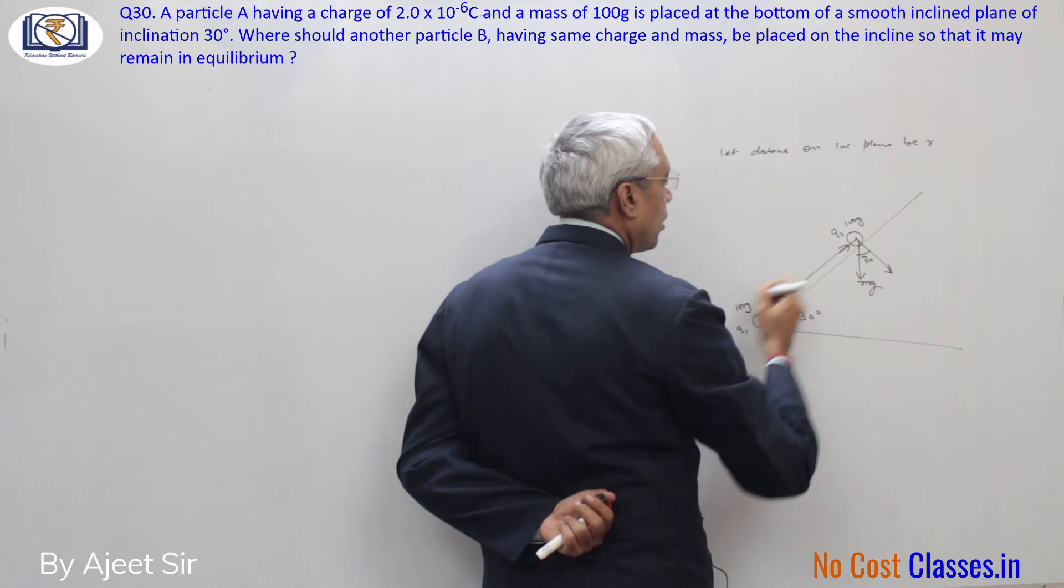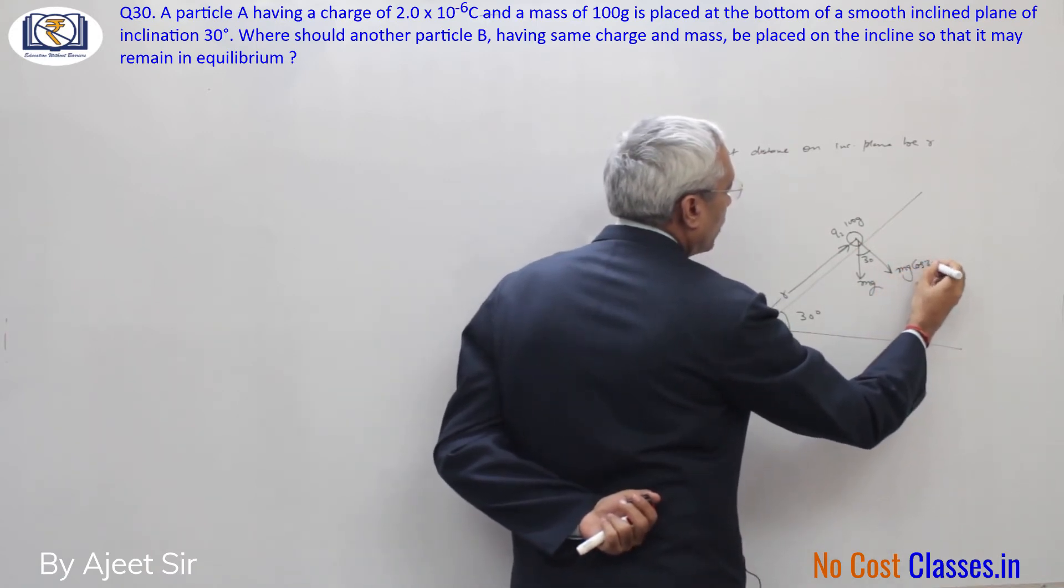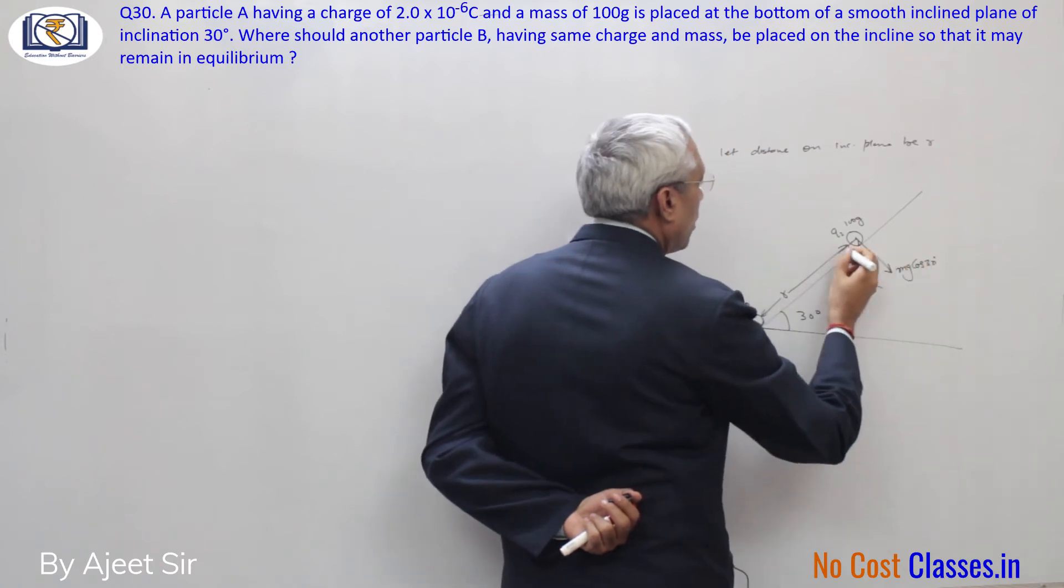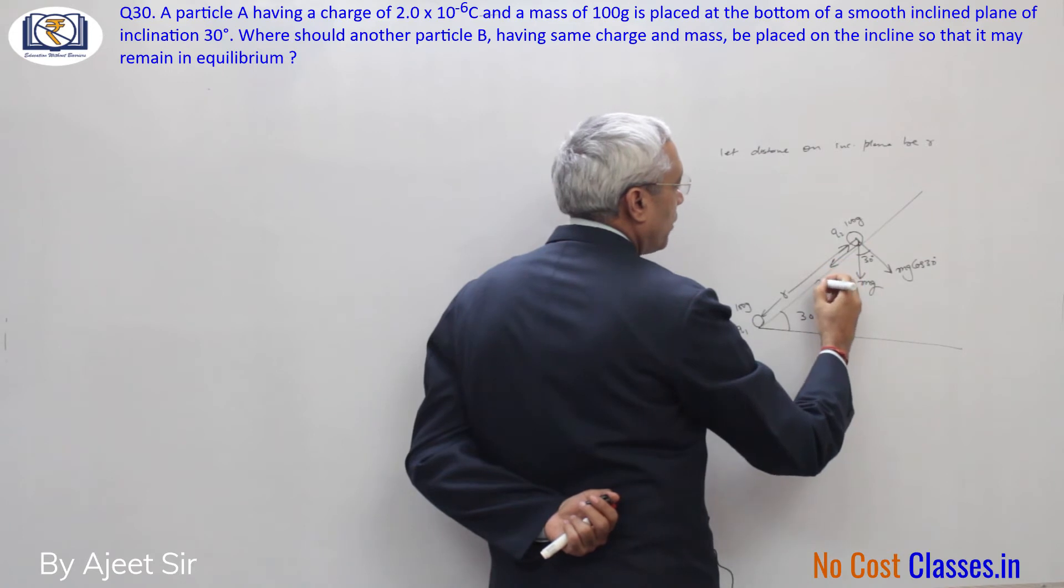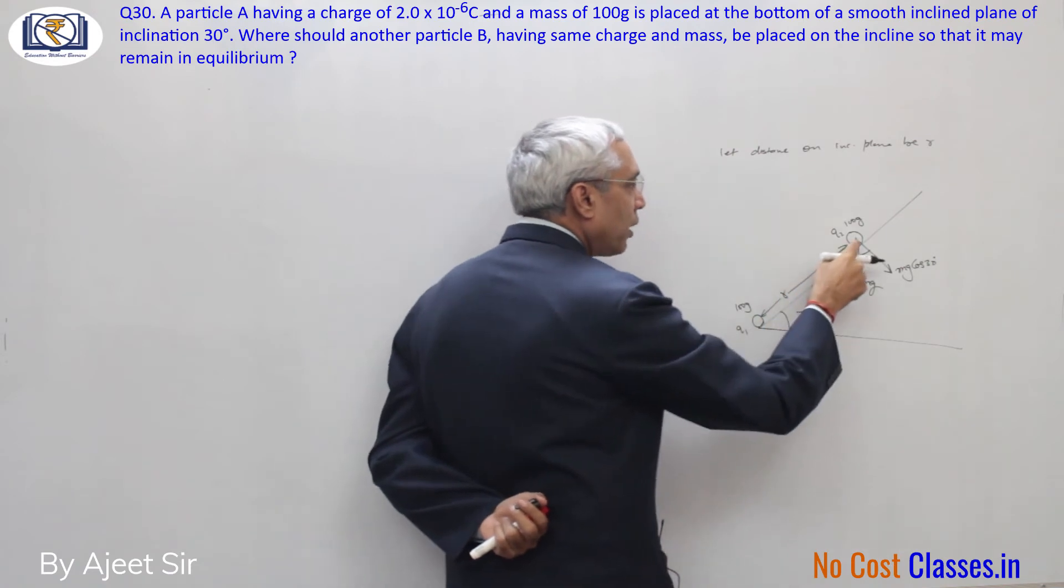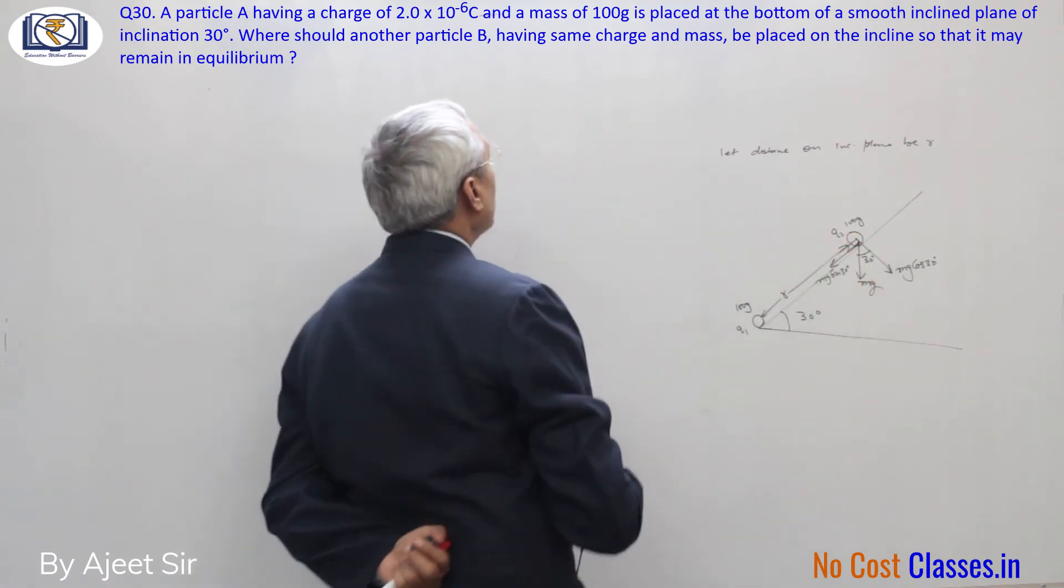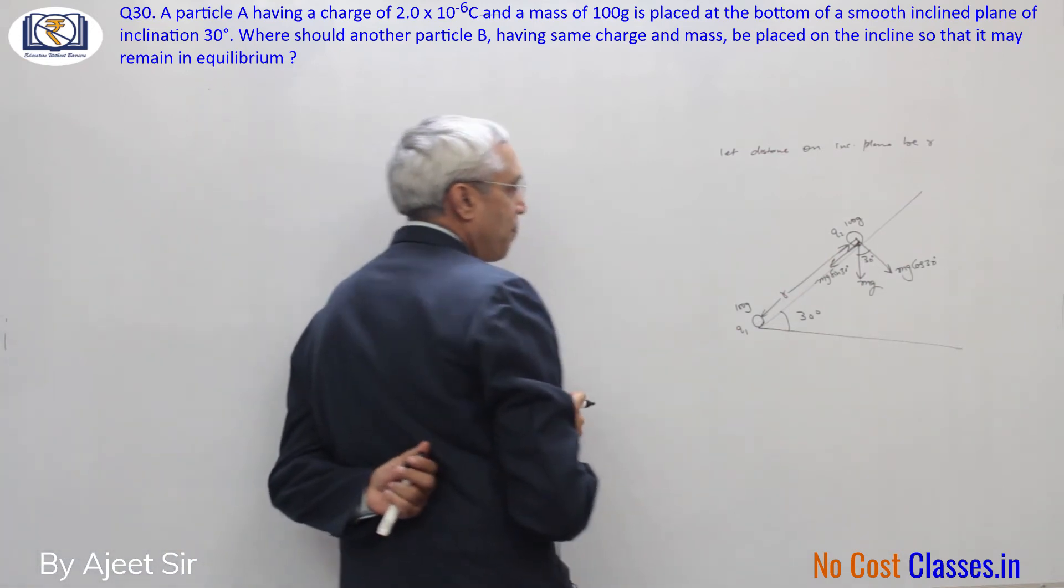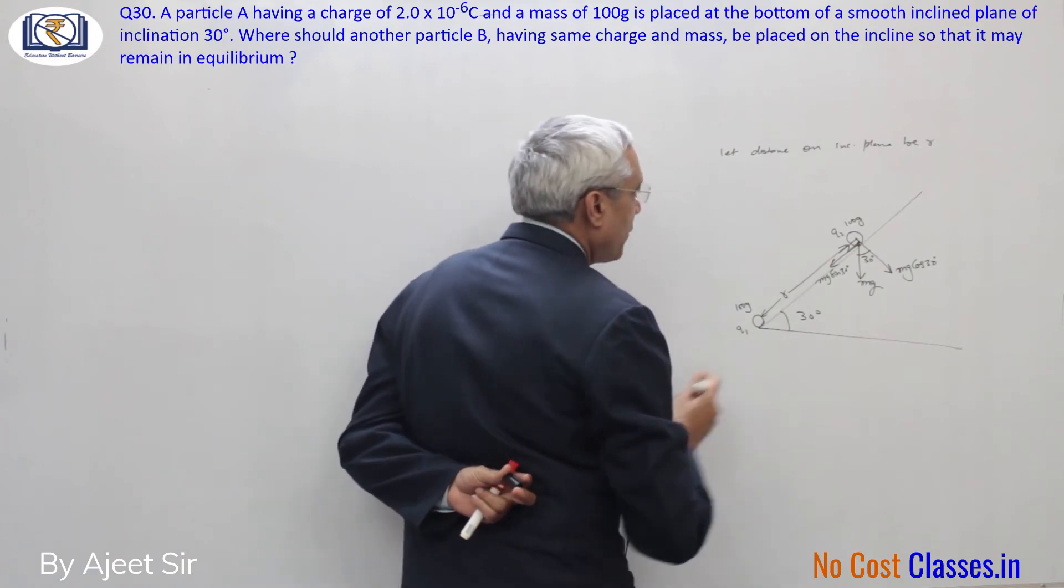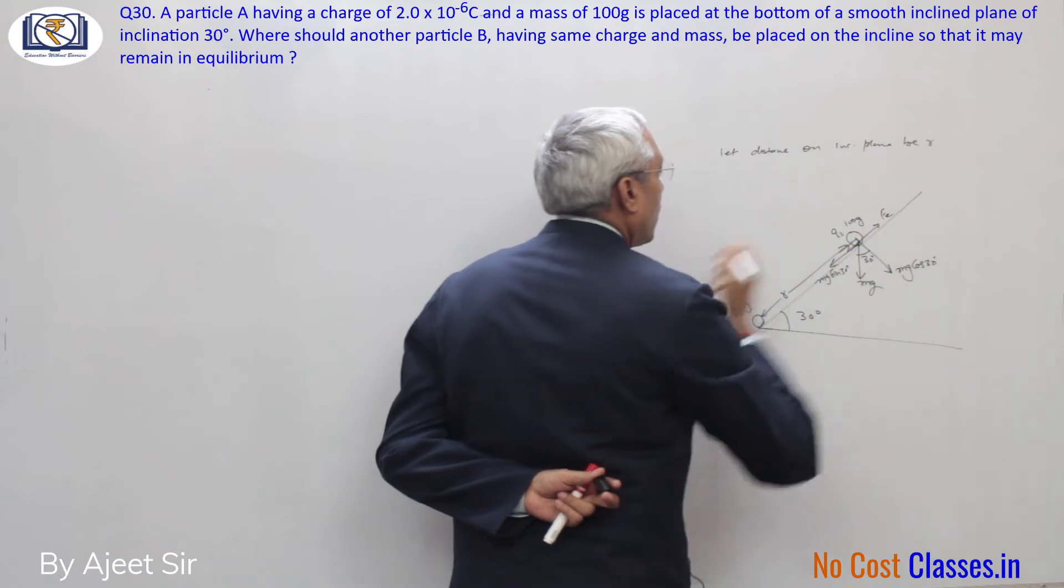So this is mg cos 30 degrees, and the force along the plane will be mg sin 30 degrees. Now this mg sin 30 degrees, since the question mentions it's a smooth surface, will be countered by the electrostatic force.